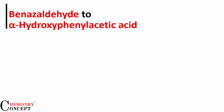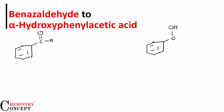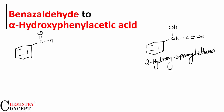We need to convert benzaldehyde to alpha hydroxy phenyl acetic acid. Let's first draw the structures of the reactant and product. Alpha hydroxy phenyl acetic acid is the common name for 2-hydroxy-2-phenyl ethanoic acid.